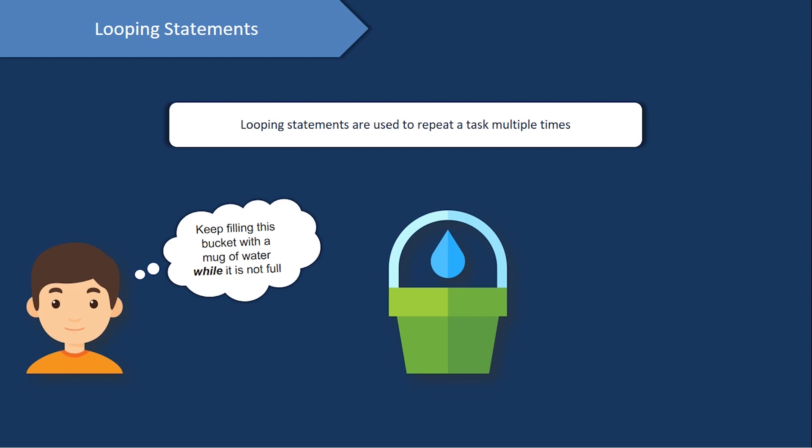Now we'll see looping statements. If you need to print 1 to 10 without using a loop, you'd need to write each manually. But with coding we use loops to avoid hard work. Loop statements are used to repeat a task multiple times. For example, a for loop can print values 1 to 10 — you just specify the range.